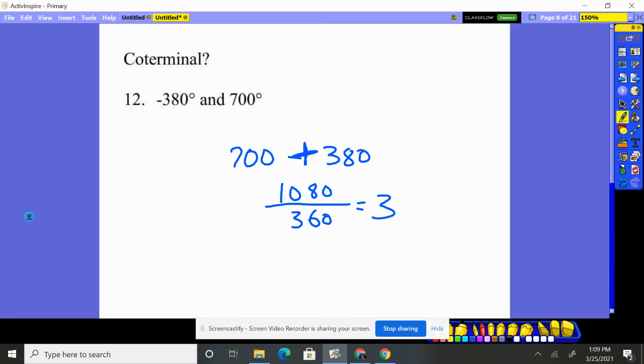They are pointing in the exact same spot. Their terminal side is in the same exact spot because it's three things of 360. It spun around three times. The one guy was pointing here and the other guy ended up going around three times. Negative 380 is not pointing right there, but that's okay. Technically it's pointing down this way, but we're not worried about that. The answer is yes, they're coterminal.